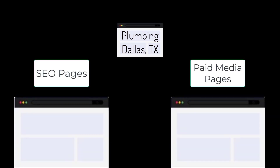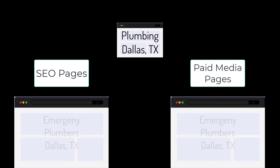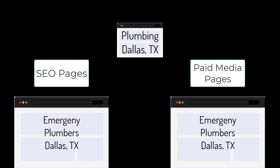For example, plumbing in Dallas, Texas. But within this broad category we will have different landing pages for paid media and SEO — like 'emergency plumbers Dallas Texas,' '24/7 plumbers Dallas Texas,' 'plumbing contractors Dallas Texas.' And even this can be broken into different regions.